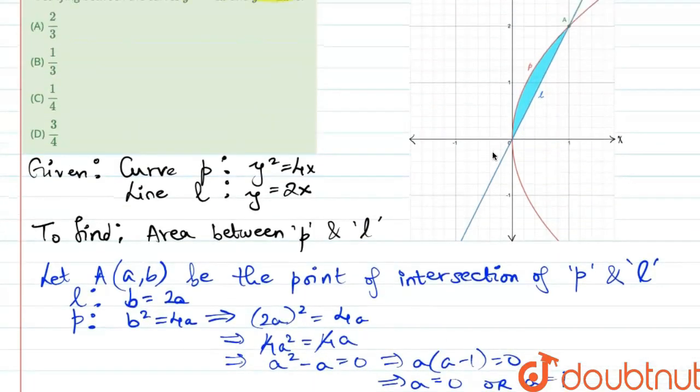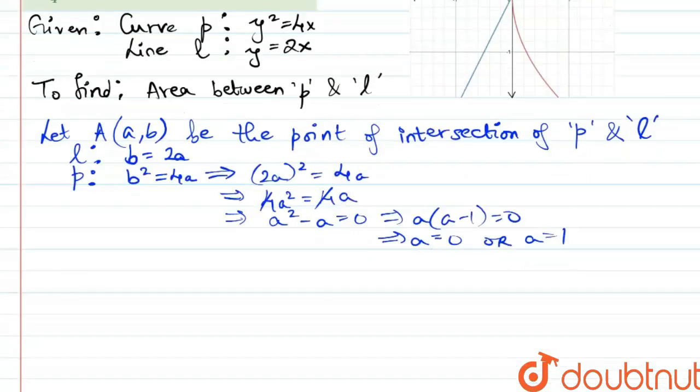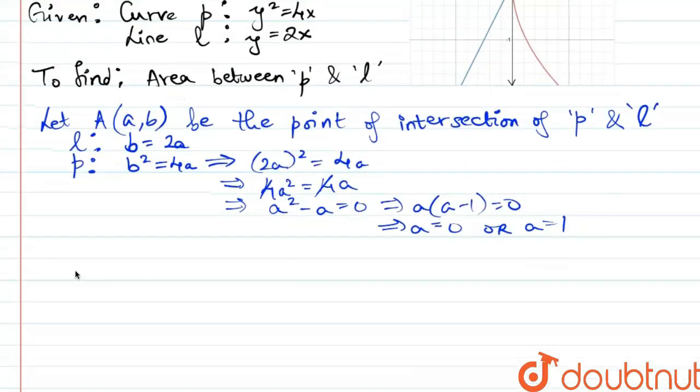Now when a = 0, that is along the y-axis, we find the origin as the point of intersection. However, we are trying to find the point A which is in the first quadrant, which means a should be to the right of the y-axis. Hence, a = 1. At a = 1, we get b = 2 × 1 = 2. Therefore, point A is given by the coordinates (1, 2).